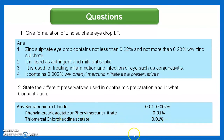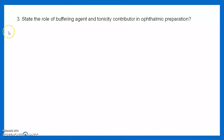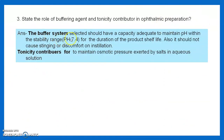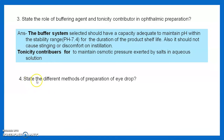The role of buffering agents in ophthalmic preparations: to maintain the pH within the stability range at 7.4 for the duration of the product shelf life, and to not cause stinging or discomfort on installation. The role of tonicity contributors: to maintain the osmotic pressure exerted by salts in aqueous solution.